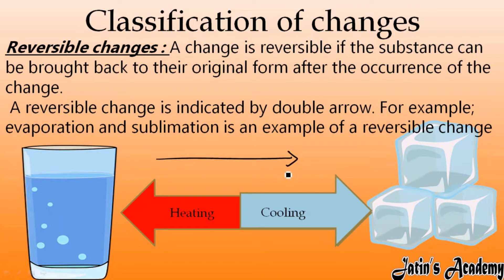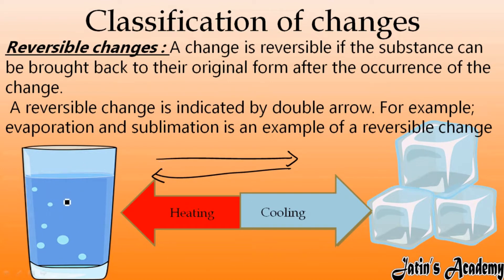So it is a reversible change — water can be converted into ice and ice can be converted into water. Reversible change is always indicated by a double arrow. A double arrow means this can go here also and this can come here also. The condition is here we have to cool it and here we have to heat it.